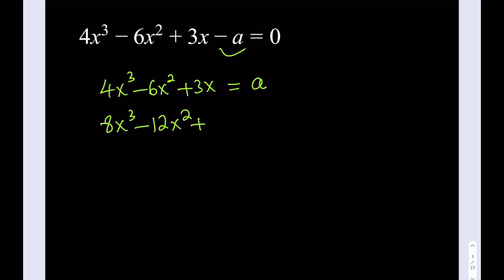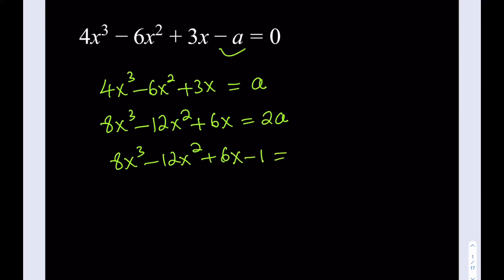Maybe you've already noticed. Let's multiply everything by 2. Now, if you look at the left-hand side very carefully, it looks like something. In order to make it look more like it, we can subtract 1 from both sides. And now hopefully you're able to see what it looks like — the left-hand side is a perfect cube, because I can write it as (2x − 1) to the third power. And 2a − 1 is considered a constant here, so we're solving for x.